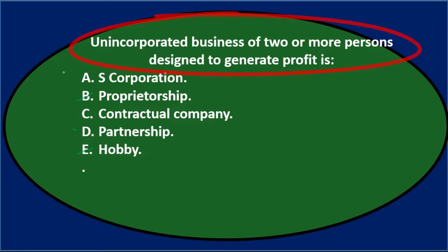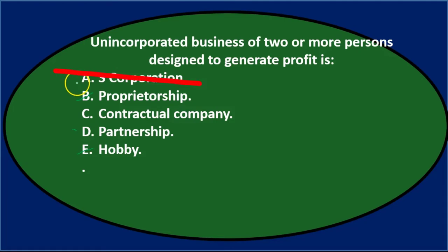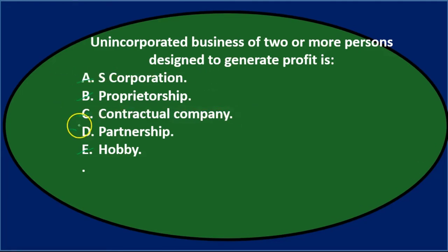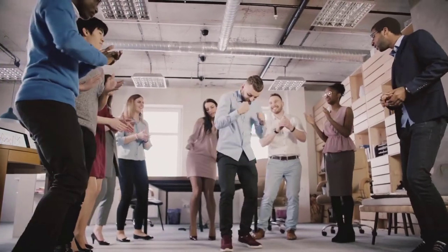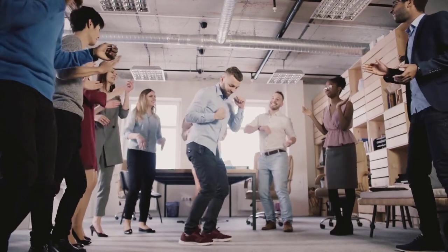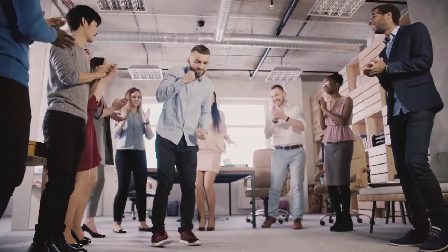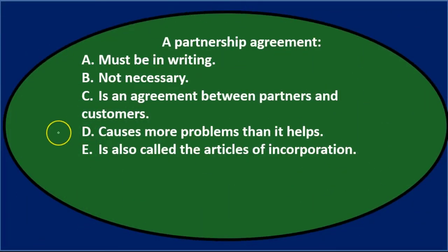If we're left with C and D, an unincorporated business of two or more persons designed to generate profit is not going to be an S corporation or a contractual agreement — it will be the partnership. Final answer: D) partnership. The definition is an unincorporated business of two or more persons designed to generate profit.